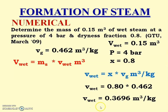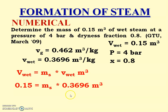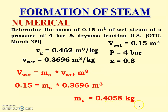Calculating, v_wet = 0.3696 m³/kg. This means each kilogram of this wet steam occupies 0.3696 m³. Therefore, mass = total volume / specific volume = 0.15 / 0.3696 = 0.4058 kg. The mass of steam in that volume is 0.4058 kilograms.